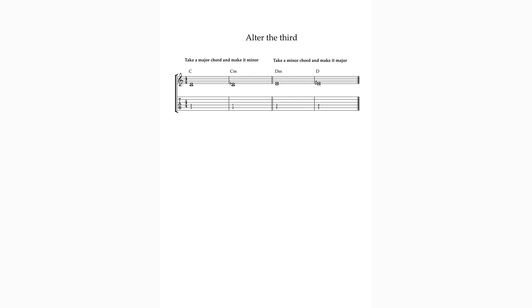Here are some options. Option one: alter the third. Alter means raise or lower a tone by a semitone — one fret. Take a major chord and make it minor, or take a minor chord and make it major.